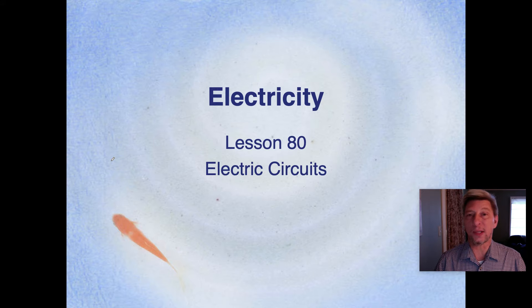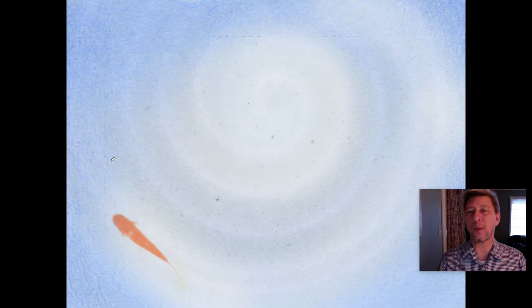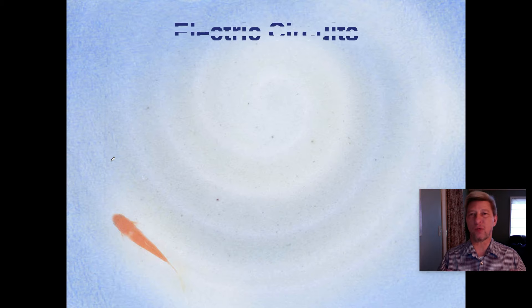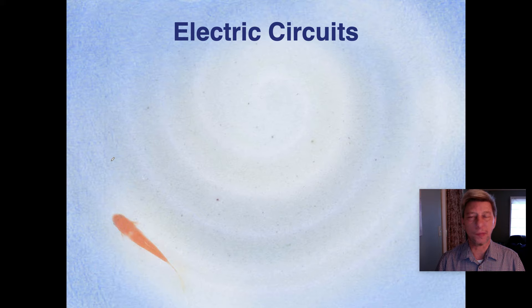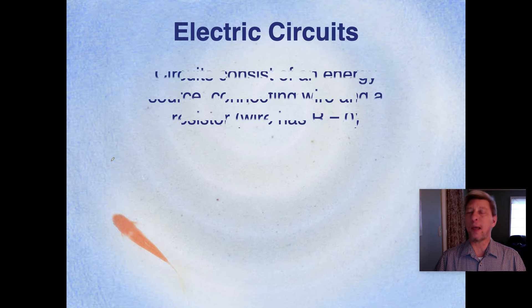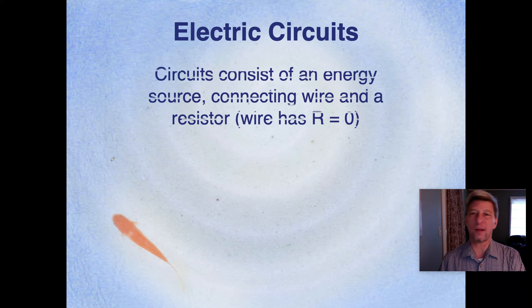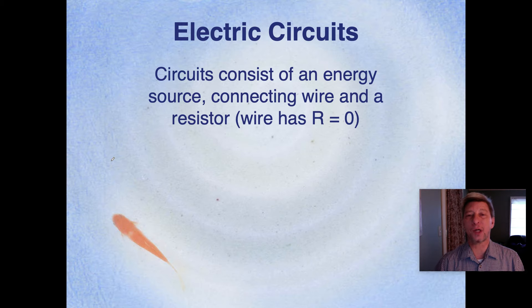But the way that this has to work is that we have to build a circuit. Now, as a word of caution, everything that we talk about today is going to be what's known as a direct circuit where all of the electrons are running in one direction. In reality, the stuff that you plug into a wall is what we call alternating current. And we're not going to talk about that until two units from now after we've talked about magnetism.